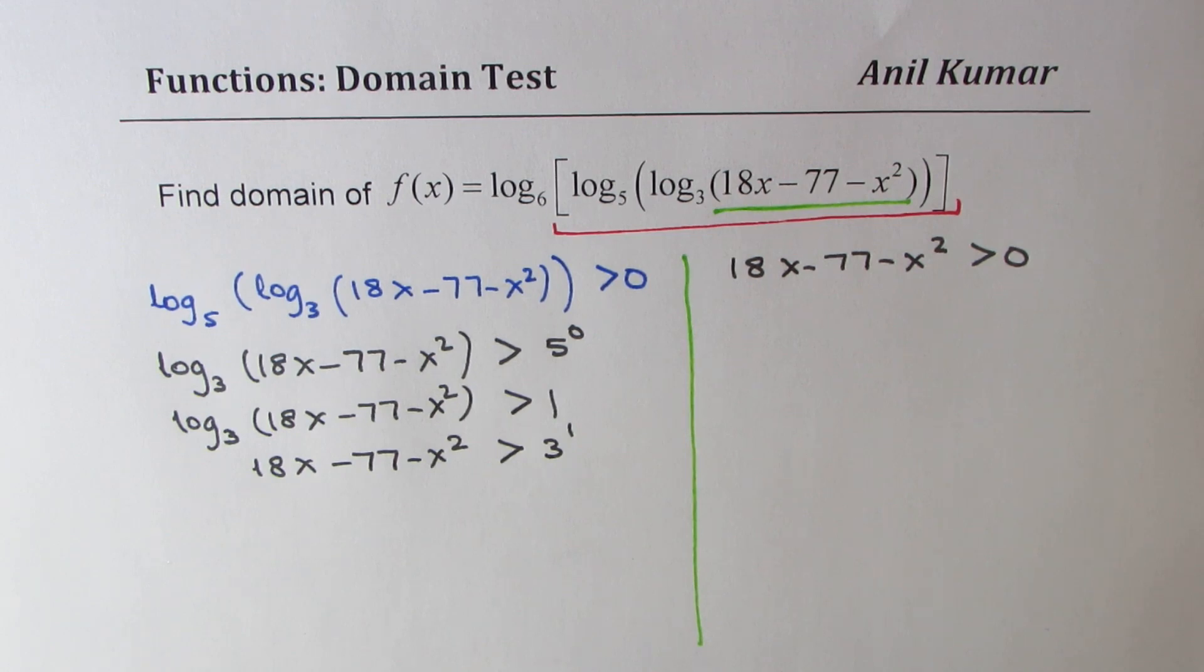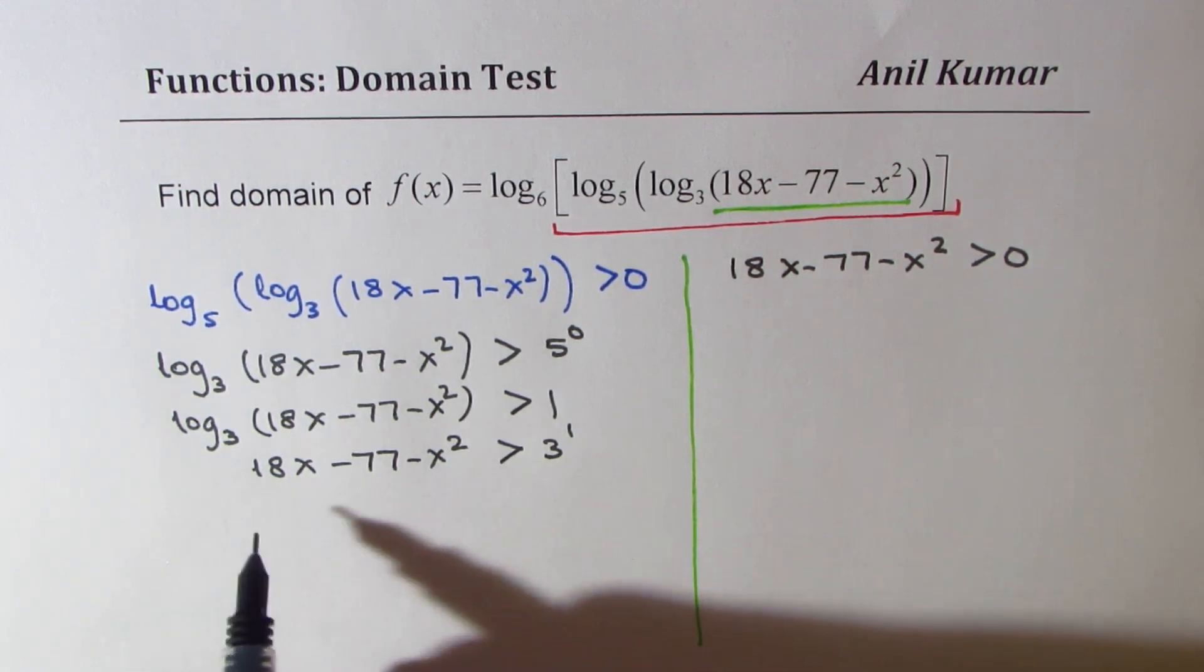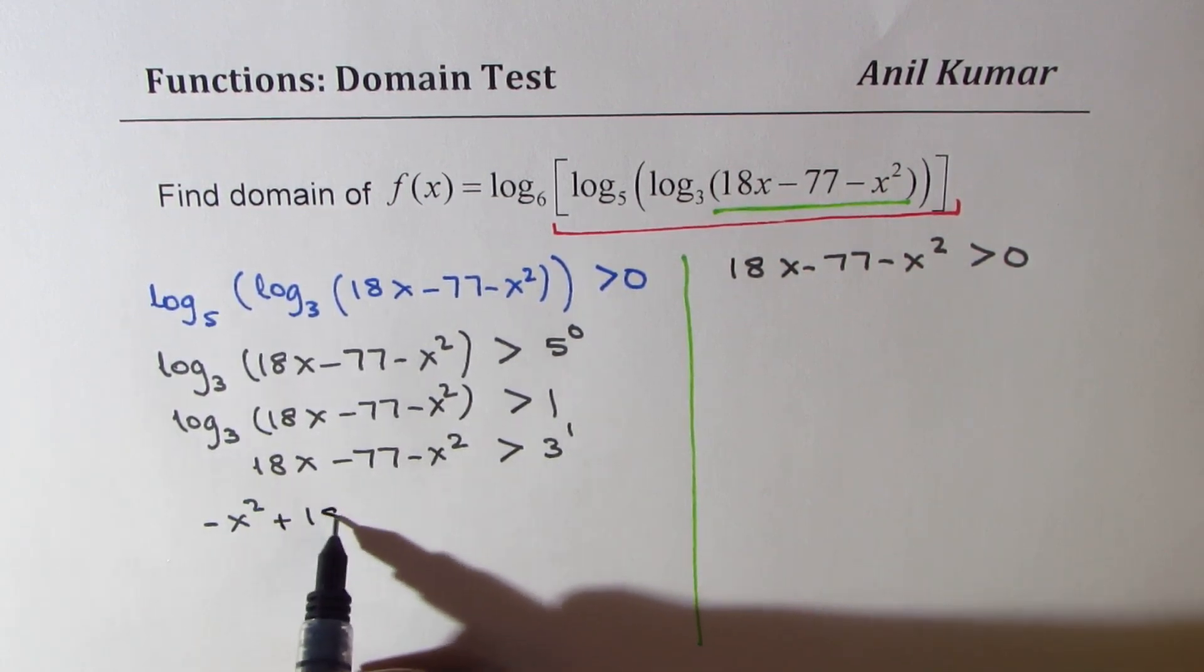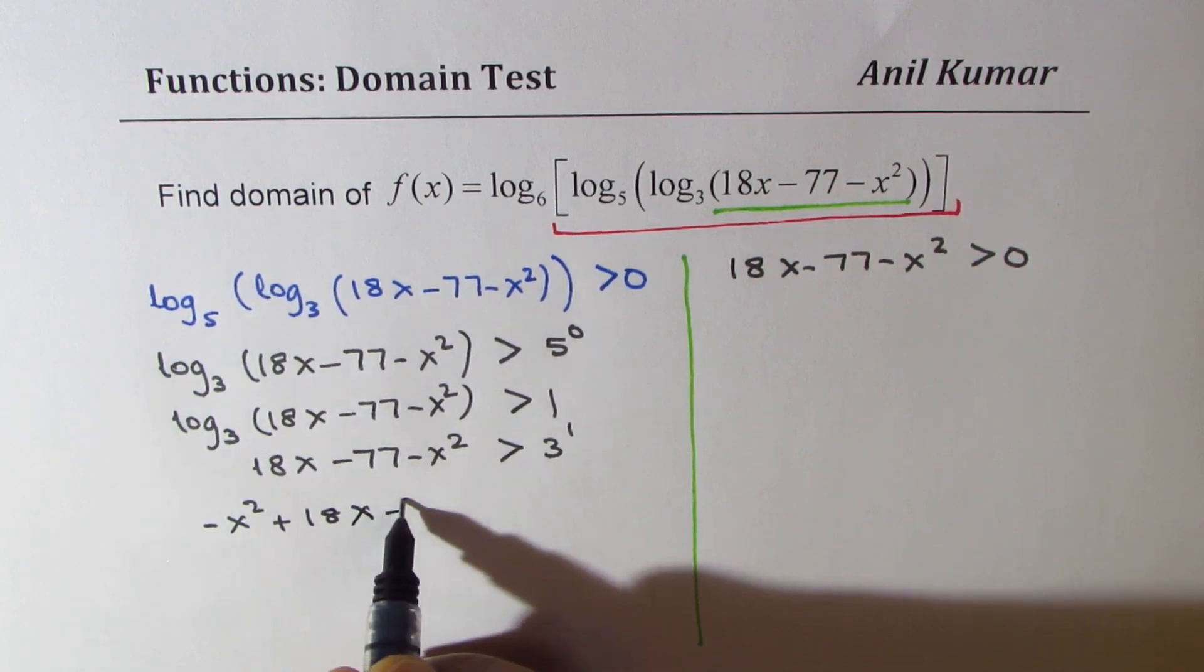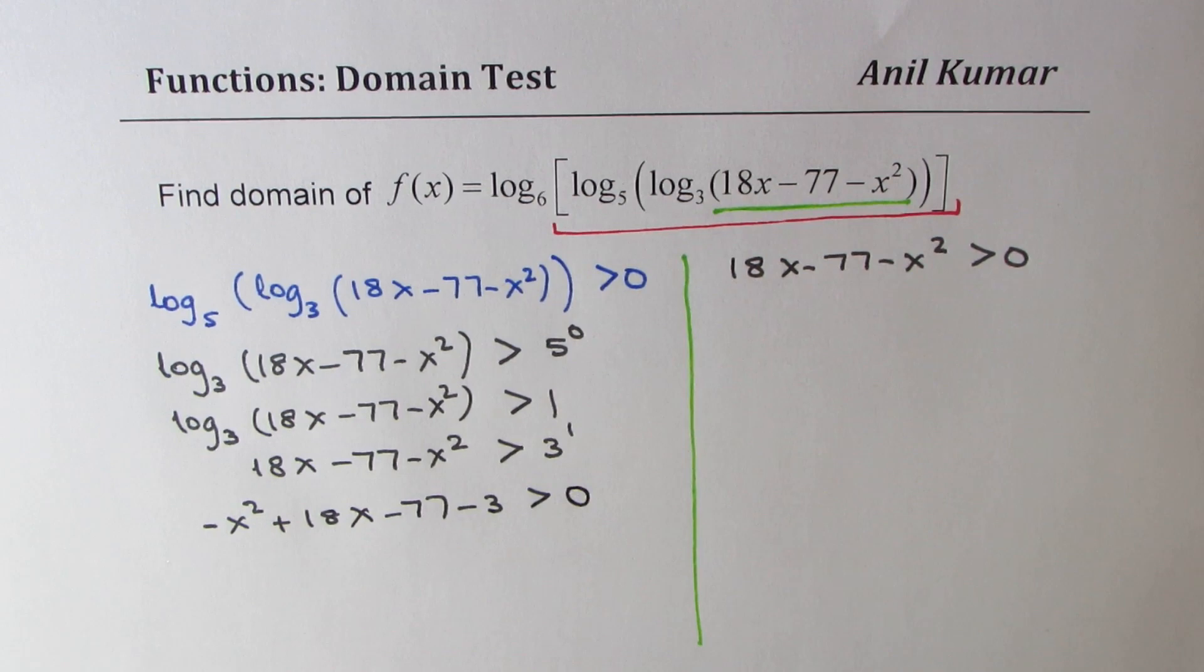Now let's bring this 3 to left side and rearrange. So what we get here is minus x squared plus 18x minus 77 minus 3 greater than 0. Let's combine these terms.